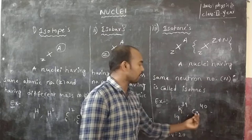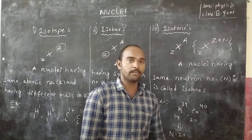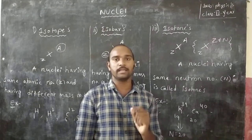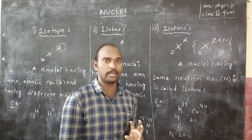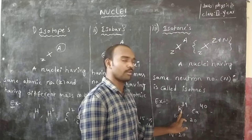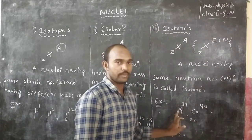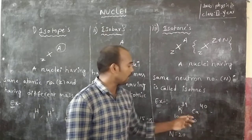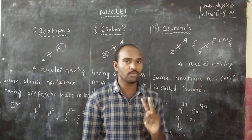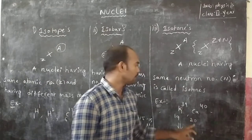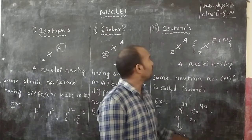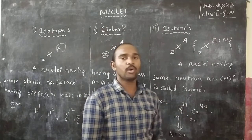Potassium and calcium are different elements with different atomic numbers and different mass numbers. But their neutron number is the same — both have 20 neutrons. That is the significance of isotones: same neutron number but different atomic number and mass number.